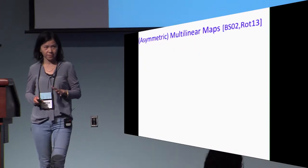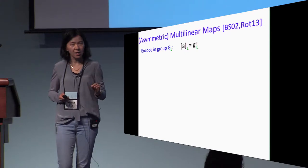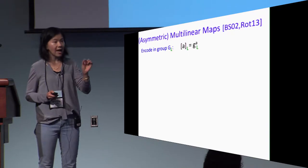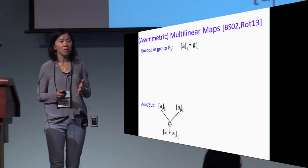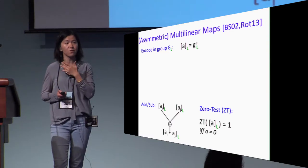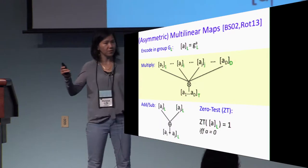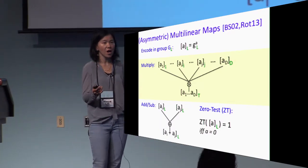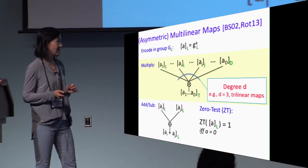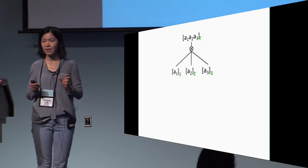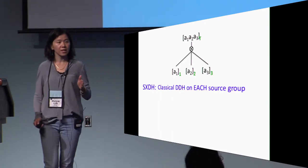Let me tell you more formally what we achieve. This object of multilinear map allows us to encode the ring elements in groups by putting them in the exponent. I will use this bracket notation where the element encoded is in the bracket and the index of the group is in the lower right corner. Such encoding naturally supports homomorphic addition and subtraction and also allows us to test whether an encoding encodes zero or not. The magic is really in the homomorphic multiplication. We can take encodings in different groups and homomorphically multiply them together, encoding in the target group the product. The degree of the multilinear map is exactly how many encodings we can multiply together. In the case of trilinear map, we can multiply together just three encodings.